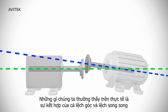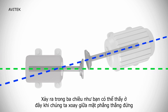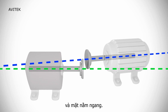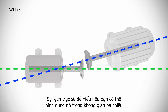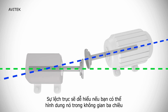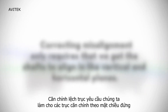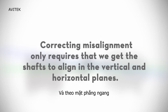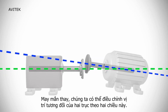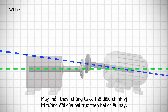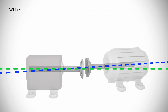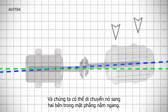What we usually see in the field is a combination of both offset and angular misalignment, occurring in three dimensions, as you can see here as we rotate between the vertical plane and the horizontal plane. While it is much easier to understand misalignment if you can visualize it in three-dimensional space, correcting misalignment only requires that we get the shafts to align in the vertical plane and in the horizontal plane. Fortunately, we are able to adjust the relative position of the two shafts in these two dimensions. We can raise and lower the movable machine in the vertical plane, and we can move it side to side in the horizontal plane.